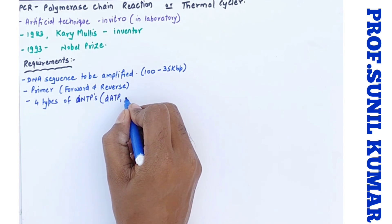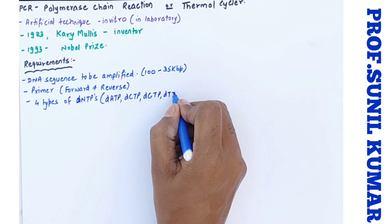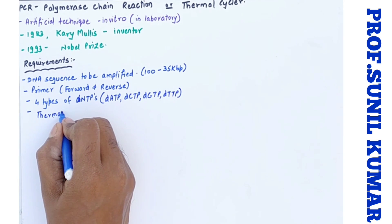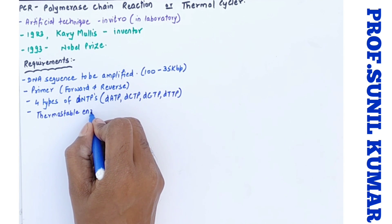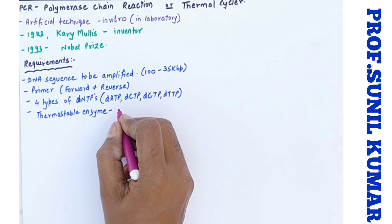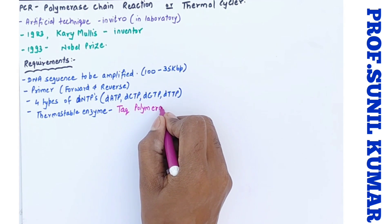We require four types of dNTPs, that is deoxy adenine triphosphate, deoxy cytosine triphosphate, deoxy guanine triphosphate, and deoxy thymine triphosphate, all the four dNTPs in equal amount. Plus, most important, what we need is a thermostable enzyme and that enzyme is called Taq polymerase.